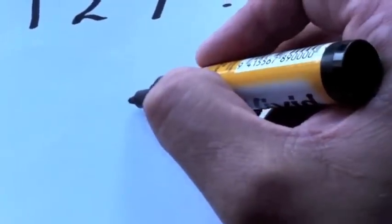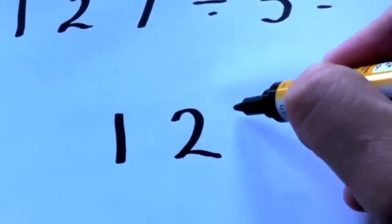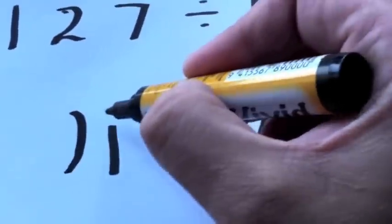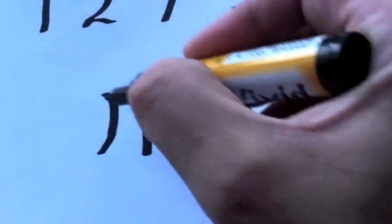So you're going to use the same process though, 127, and you're going to set it up in the same long division table format, divided by 5.